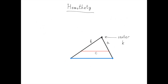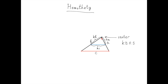Now let's see what happens if we choose a different value for k, for example, one half. Then the transformation would look something like this. The lengths of the transformed triangle are again k times a, k times b, and k times c. In this case, k is 0.5, and so essentially this length is half of a, so this is the midpoint of this side, and analogously this is the midpoint of this side, and also this is half the length of that.